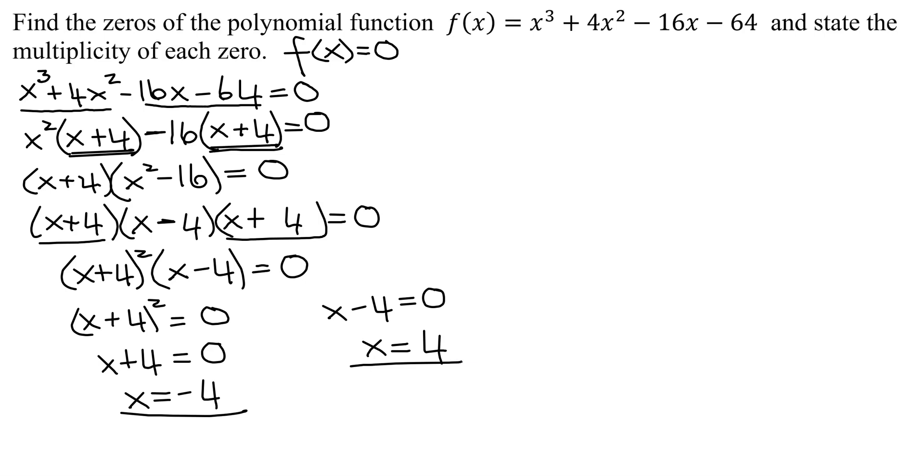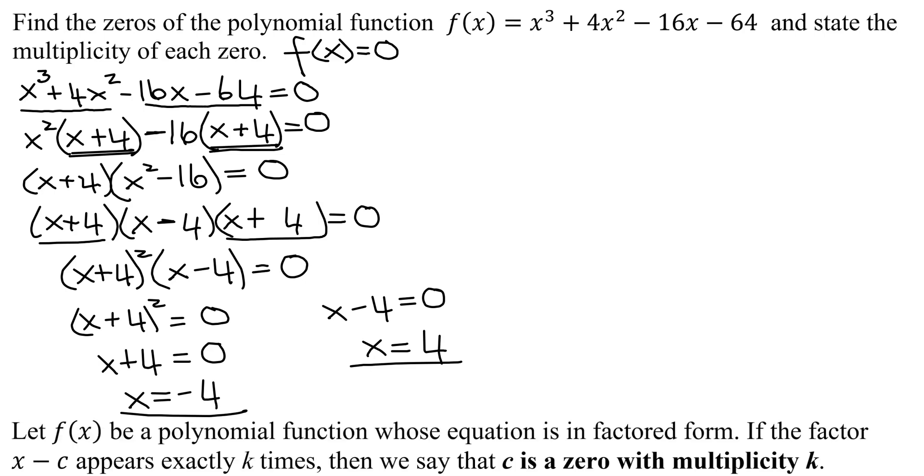All I have to do is find their multiplicity. Quickly reviewing multiplicity: if f(x) is a polynomial function whose equation is in factored form, then if the factor x - c appears exactly k times, then we say c is a zero with a multiplicity of k.